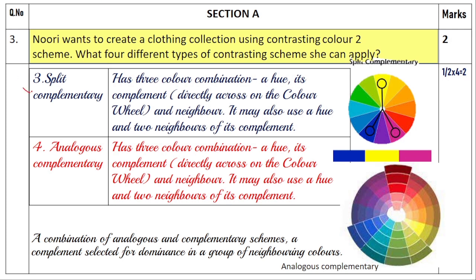The third type is split complementary. It has three color combinations: one hue — say yellow — its complement, which is purple, and the neighbors of that complement. So instead of using purple directly, you use blue-purple and red-purple along with yellow. This is the split complementary color scheme.